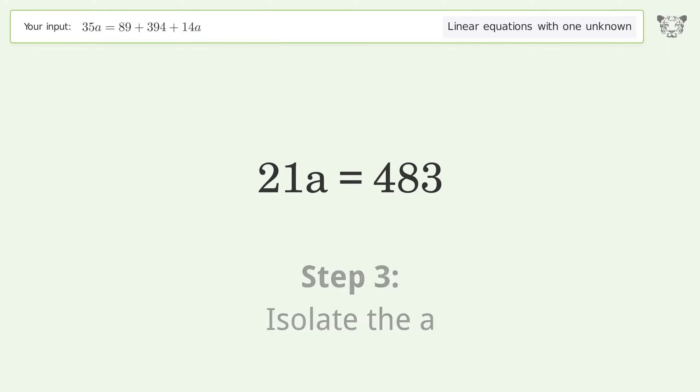Isolate the A. Divide both sides by 21. Simplify the fraction.